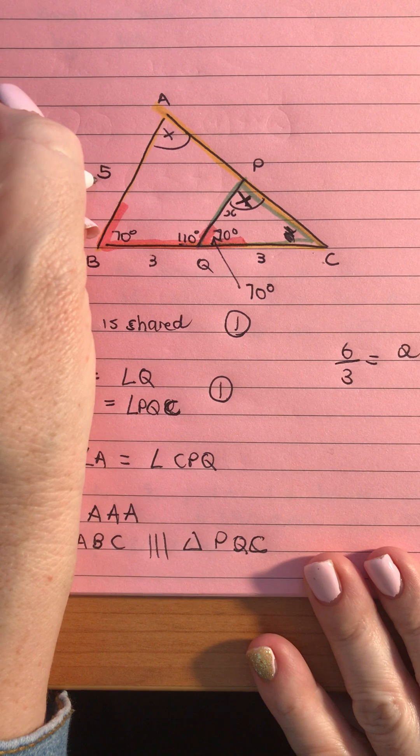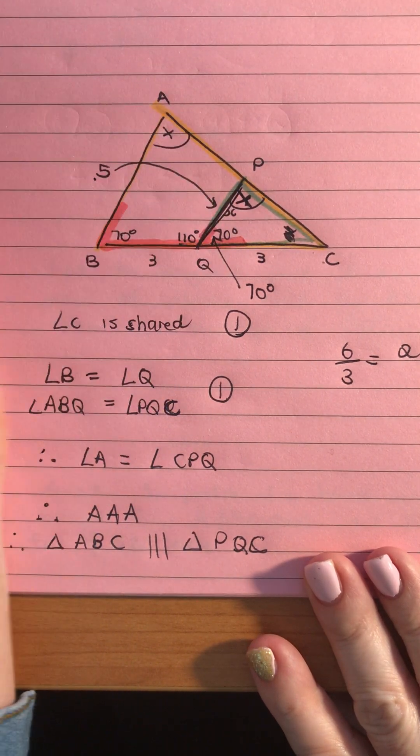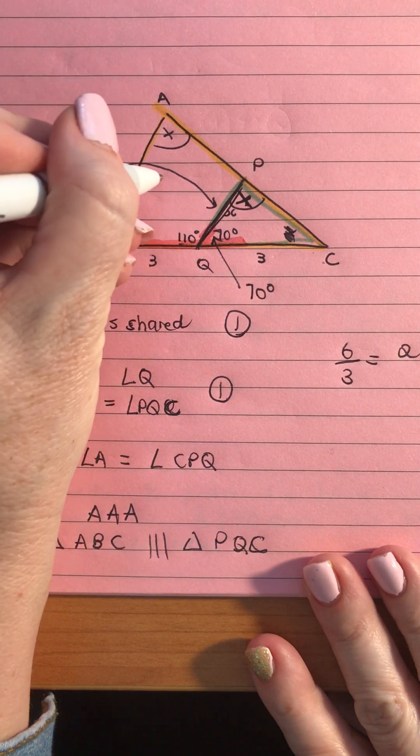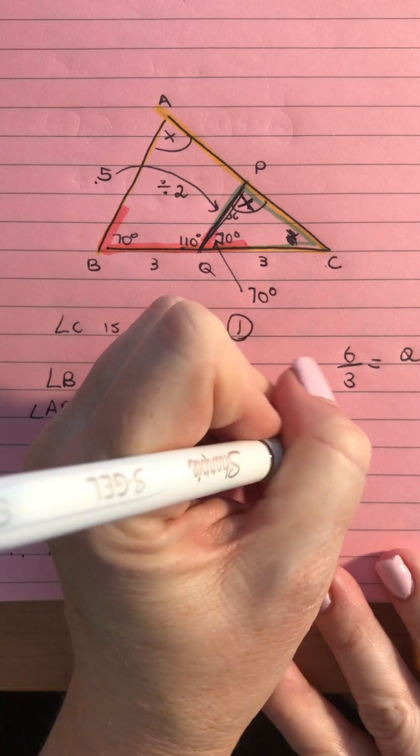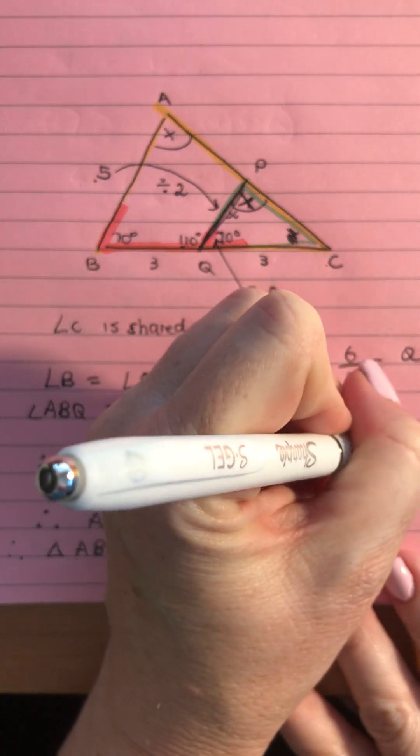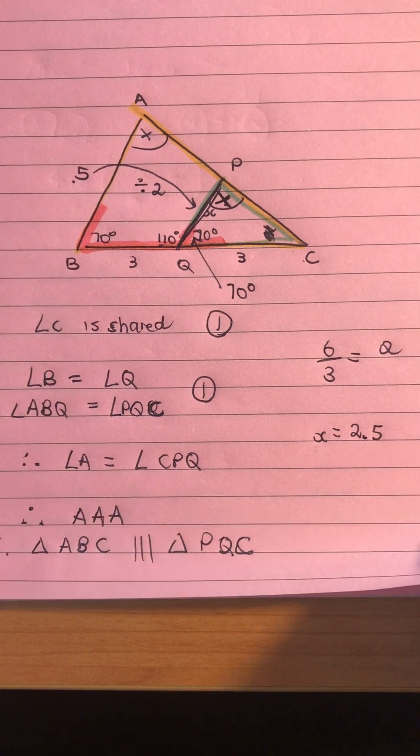That means if we're going from this 5 over to this x here we're going to go to a smaller triangle which means we divide by the scale factor which means we're going to divide by 2 so our x is equal to 2.5. Now if there were some units on there we could put a unit on the value of x there.